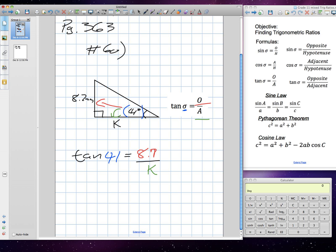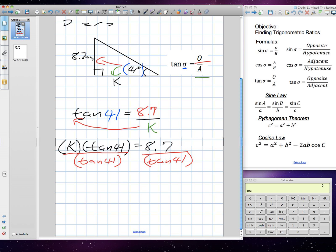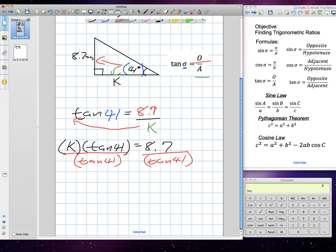So, the very first thing I want to do is I want to move K to the other side of the equation. So, when I move K to the other side, it's going to become multiplied by. So, we're going to get K times tangent 41 is equal to 8.7. We still need to isolate K. So, I need to move tangent 41 now to the other side of the equation. And in order to do this, we're going to divide both sides by tangent 41.